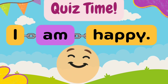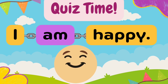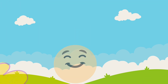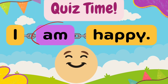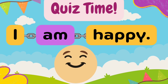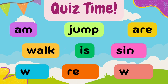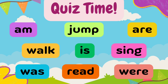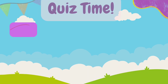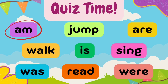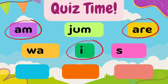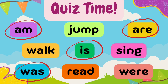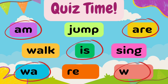Quiz time! Can you identify the to be verb in the sentence? I am happy. That's right, kids! The to be verb in the sentence is 'am.' Can you identify all the to be verbs here? The to be verbs are: am, are, is, was, and were.